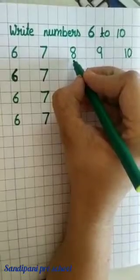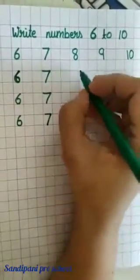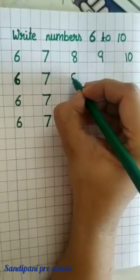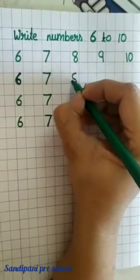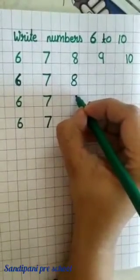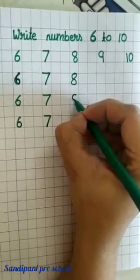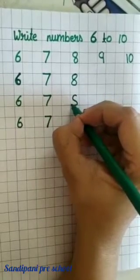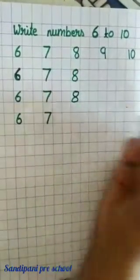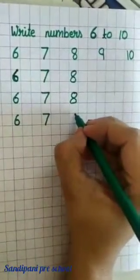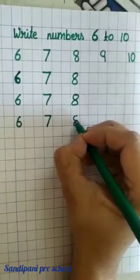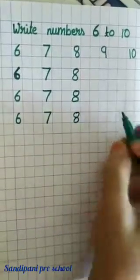Now, which number is this? Number 8. So, how to write number 8? In this way. A curve again and joining another curve makes number 8. You can see — aap dhek sakte ho. S hum likhte na? Is tarah se. S and isko vaapas pulta S karke join kar do. This is number 8. Again, a curve and joining another curve makes number 8.